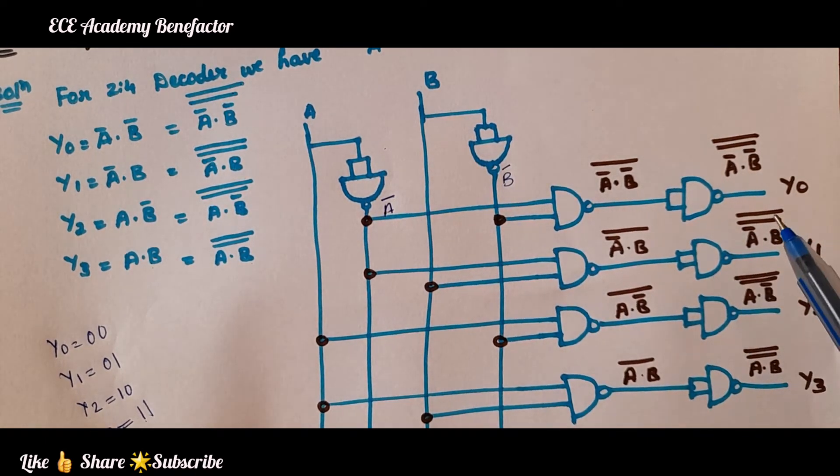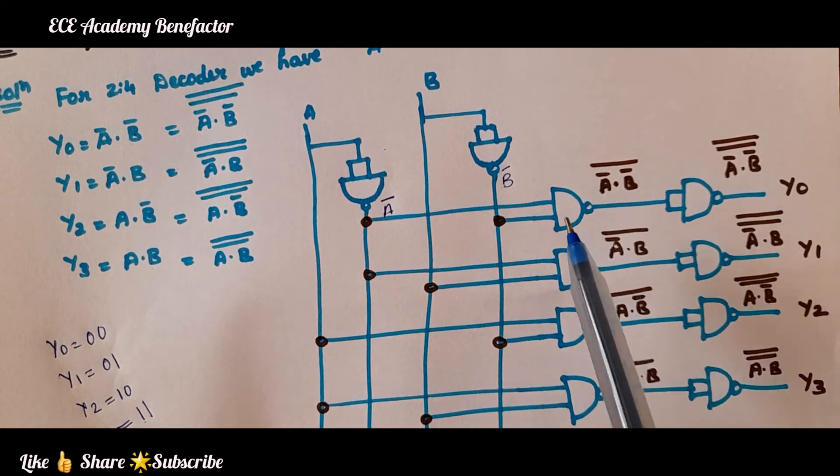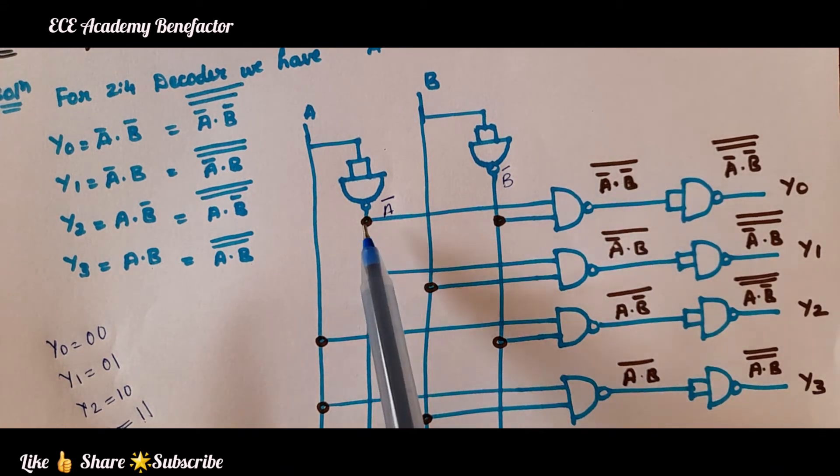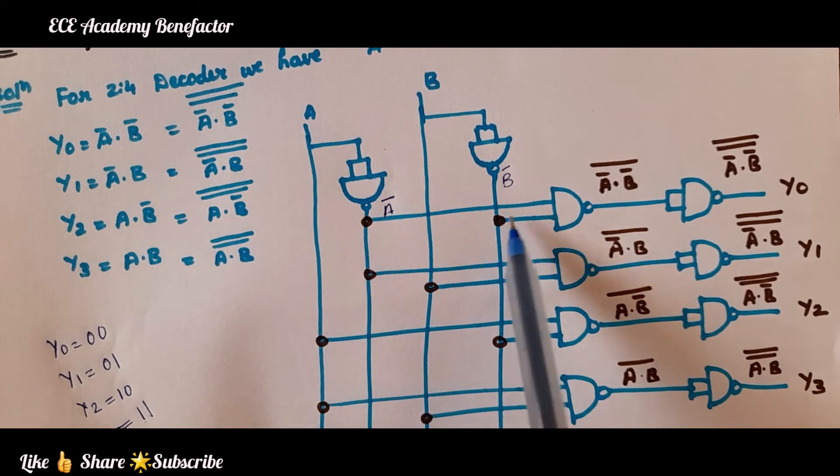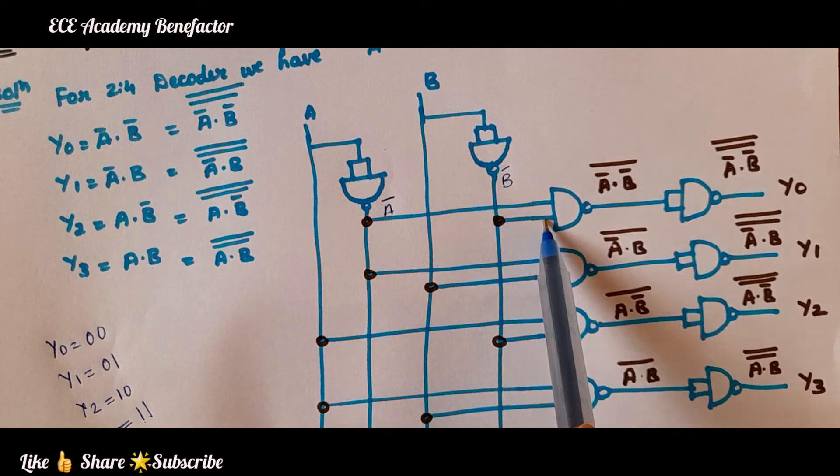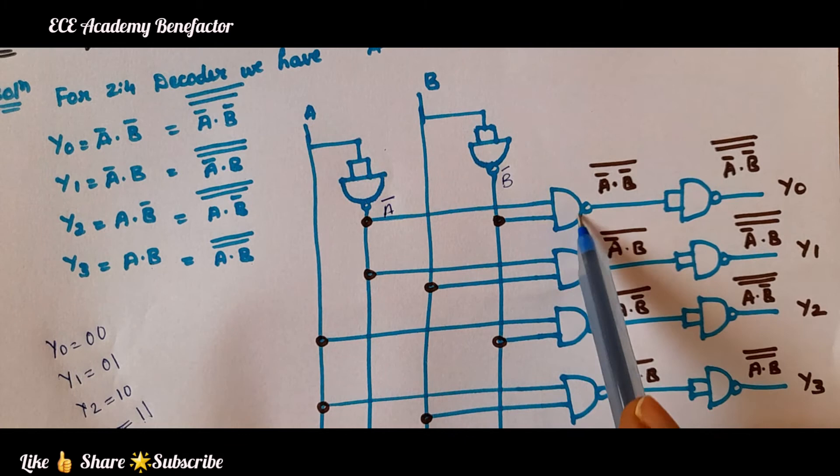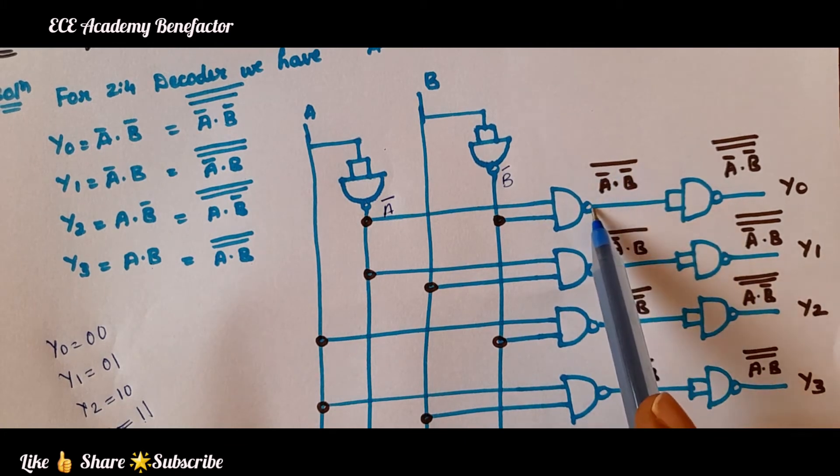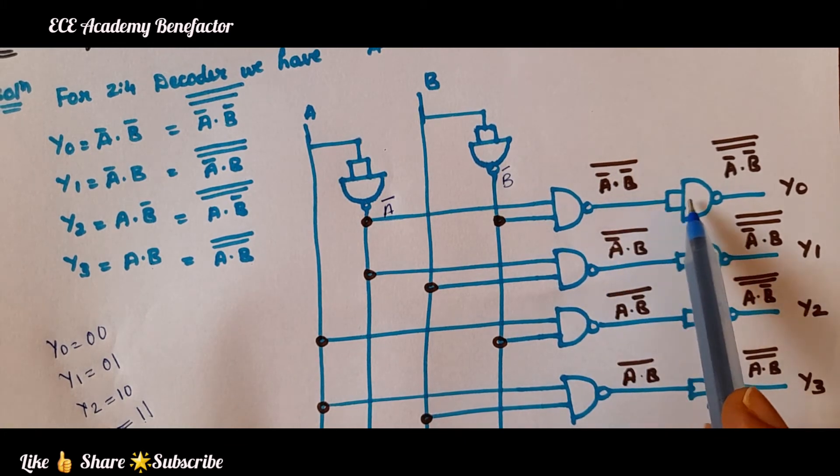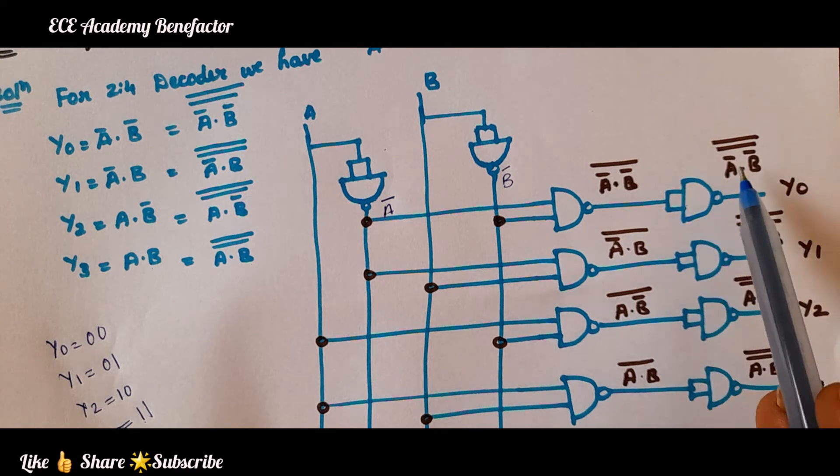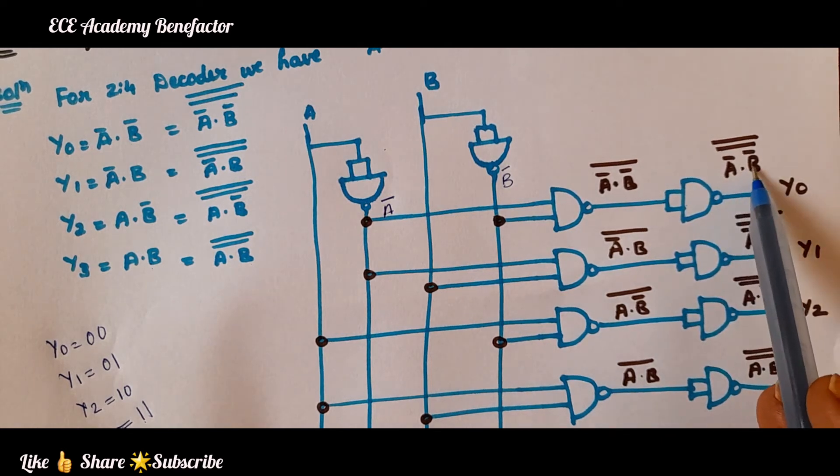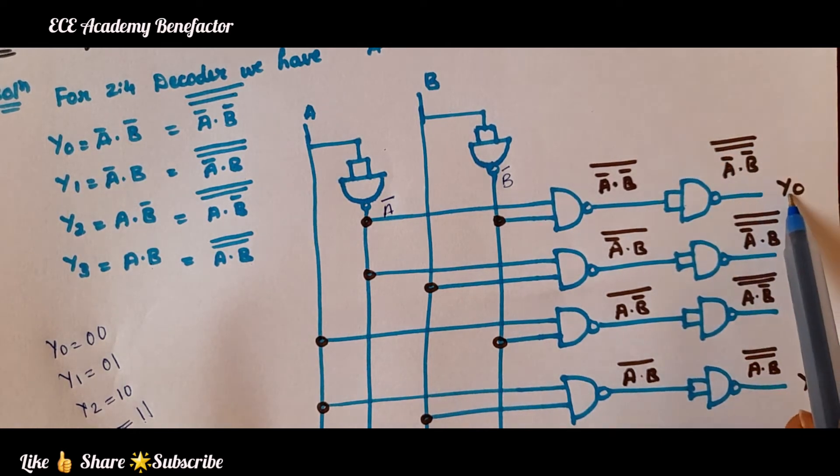To get y0 what we need? A̅·B̅. So, we are taking A̅ and B̅ and giving it to a NAND gate. And this NAND gate is again passed through NAND gate to get A̅·B̅ double bar which is equal to y0.